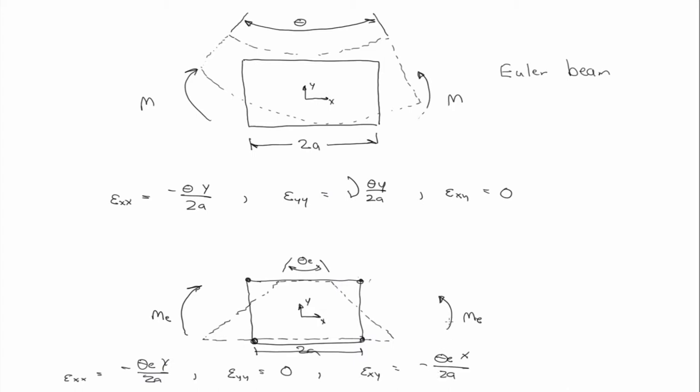So what you see here, if you compare the strains to the continuum strains that this type of element produces, a parasitic shear. You know, it's a spurious shear strain.